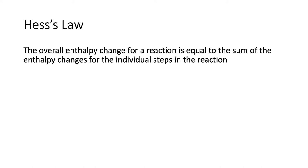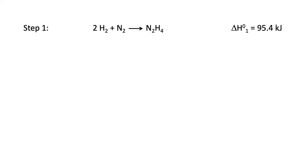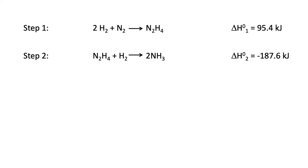Let's look at a simple example: the Haber process, the making of ammonia. We can think of it as a two-step reaction. First, hydrogen and nitrogen react to make hydrazine—an endothermic reaction with a standard enthalpy of 95.4 kilojoules. In the next step, the hydrazine reacts with hydrogen and makes two moles of ammonia, which is a very exothermic reaction.